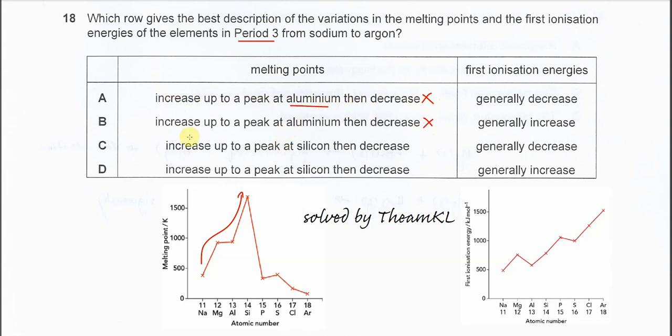Therefore the answer could be C or D now. Okay, so because it increases up to a peak at silicon then decreases for both.